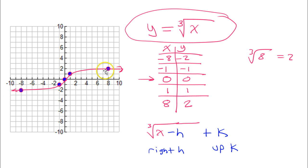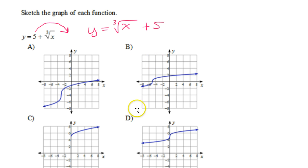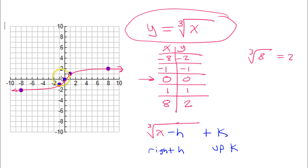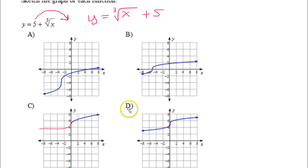So, we're looking for a graph that looks like this, but it should be plus 5. So, that's up 5. So, this is sort of the center of this graph. That's not up 5. This is the center of this graph. That's not up 5. This is up 5, but where's the rest of the graph? That's not it. That just leaves d. Here's the center of graph d. And it is up 5. So, this graph has the same shape as this graph, but it is up 5. So, the answer is d.